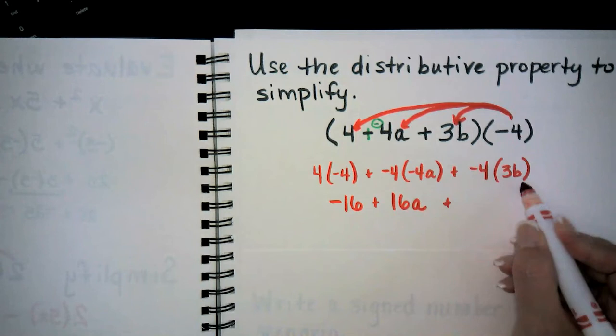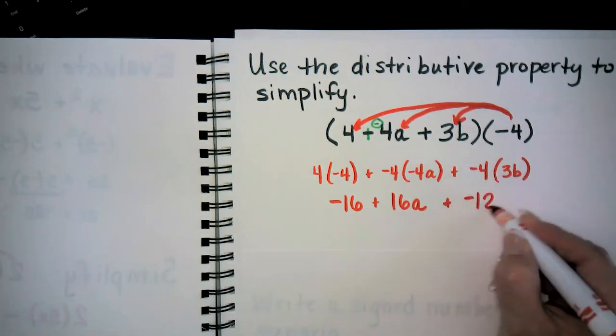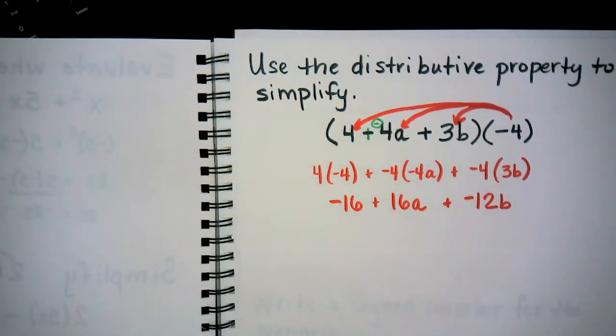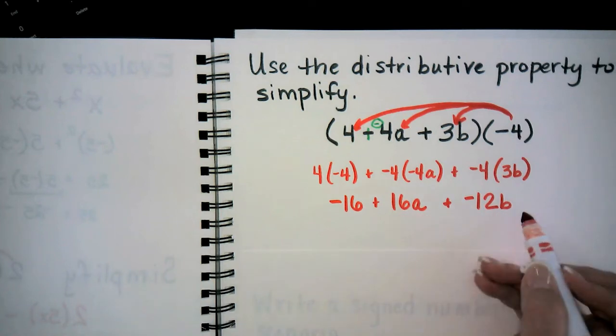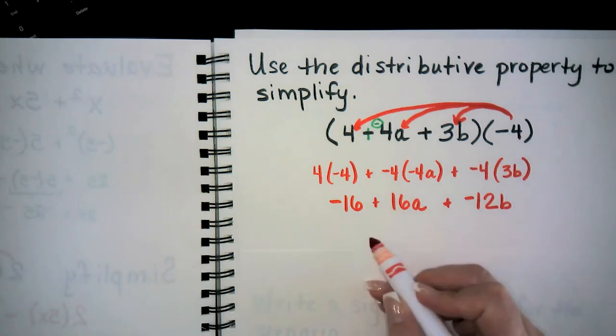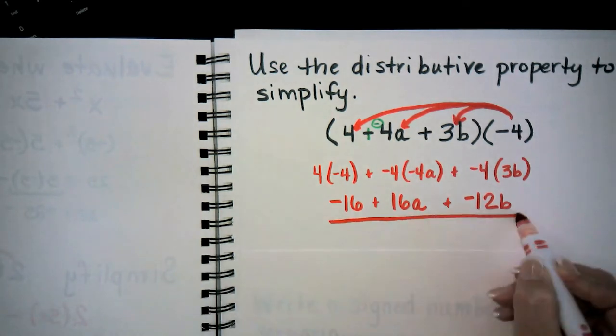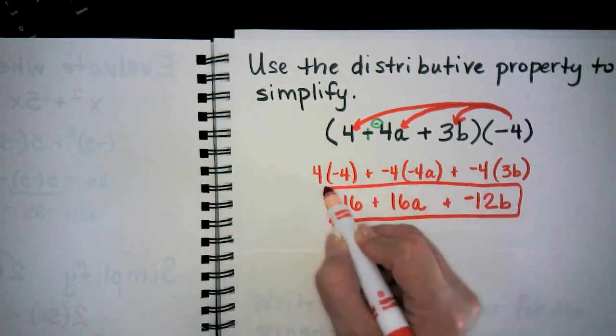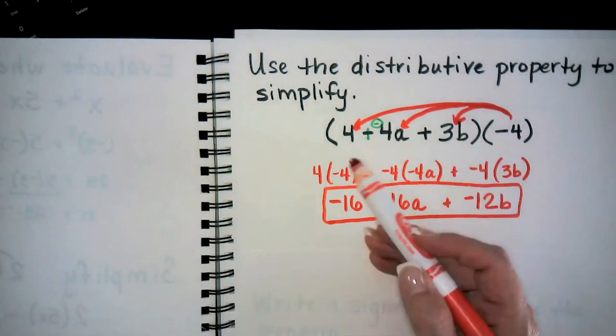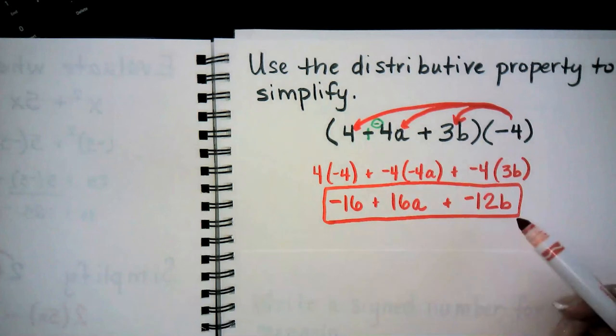Now look at the terms we have here. We have a negative 16 with no variable, we have a 16a and a negative 12b. None of these have the same variable, therefore we cannot add them. So this is our answer. All we did by using the distributive property was to eliminate the parentheses to simplify.